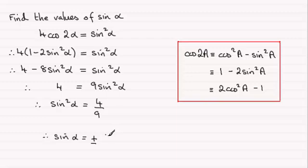And square root of 4 is 2, square root of 9 is 3, so plus or minus 2 thirds then for sine alpha. Okay?